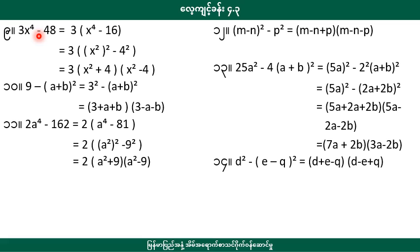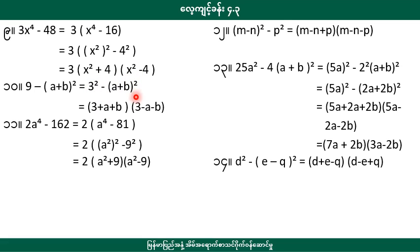3a to the power of 4 minus 4dA. The first thing we have to do is square: 3a to the power of 4 minus 4dA. The next solution is x to the power of 4, the second solution is 3dA, the second solution is a square of 6, then a square of 4. In our discussion, a squared plus 4 and a squared minus 4. Now we have a plus b to the whole square, a plus b to the whole square.